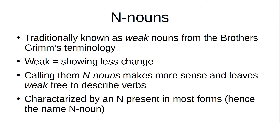These are traditionally known as weak nouns from the Brothers Grimm's terminology. As I pointed out last time, they like the words strong and weak, and they use them in all sorts of places — for nouns, adjectives, and verbs, which is kind of confusing. Weak means showing less change, but calling them N-nouns makes more sense to me and leaves 'weak' to describe verbs, because it's a lot easier to use 'weak verb' than 'weak noun.' I just prefer to keep the two separate.